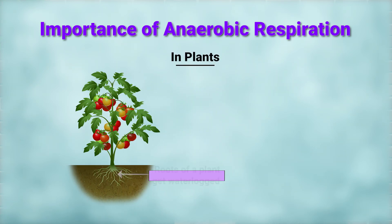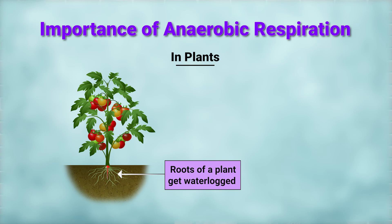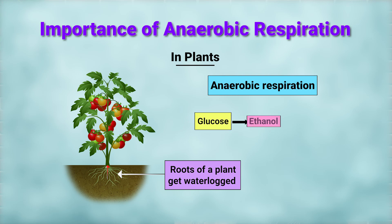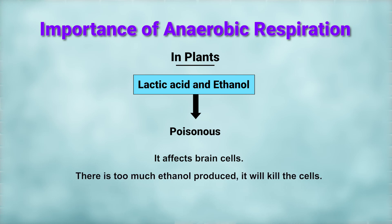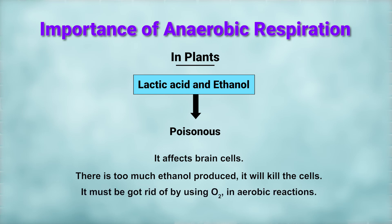In plants, if the roots get waterlogged, they start to run out of oxygen and need to use a different type of anaerobic respiration. This reaction is also used by yeast cells when they make bread or alcoholic drinks. Lactic acid and ethanol are poisonous — ethanol affects brain cells, and if too much ethanol is produced, it will kill the cells. So it must be removed by using oxygen in aerobic respiration.